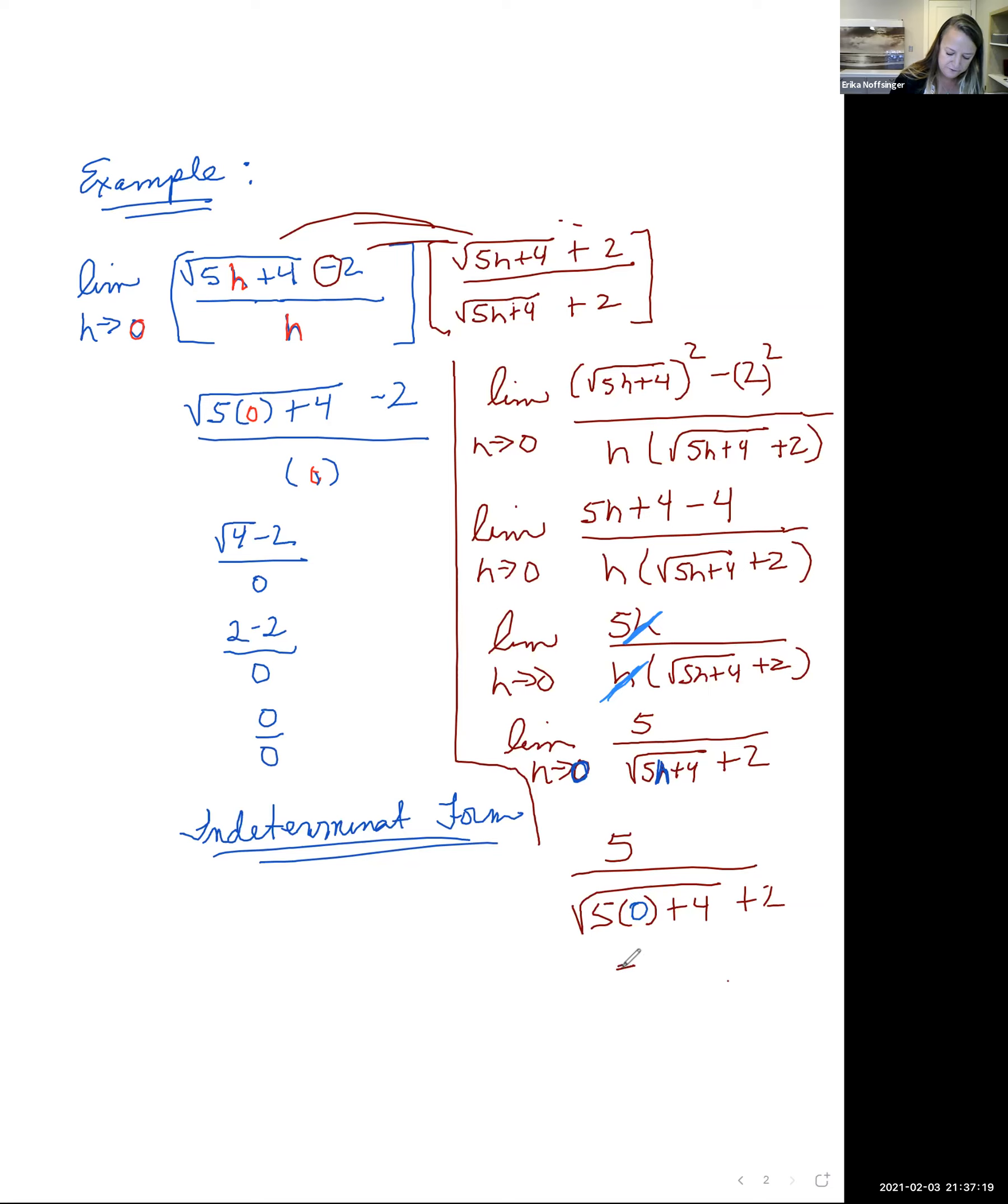And now simplifying, numerator we're still left with 5, all over the square root of 4 plus 2. So we get 5 all over the square root of 4 is 2, and 2 plus 2 is 4. So the limit as h approaches 0 of this quotient with a radical in there is 5 fourths.